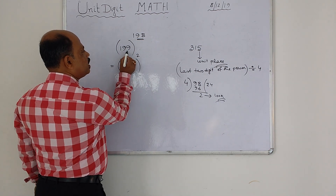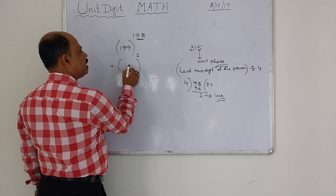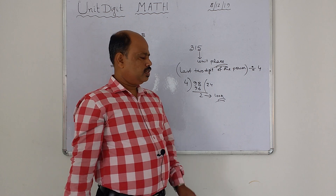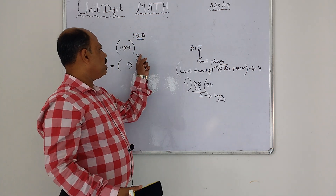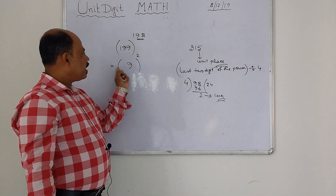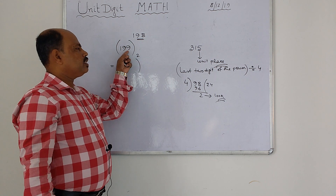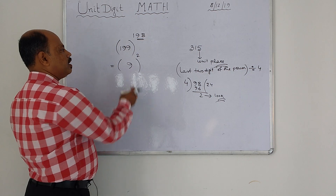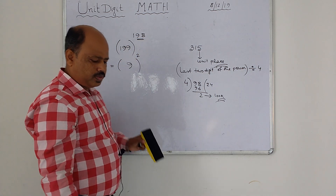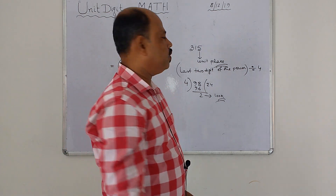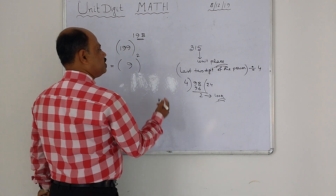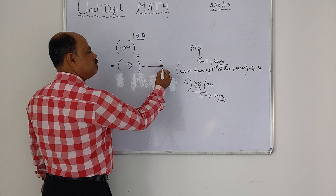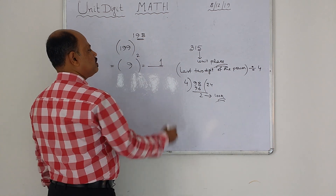What is the unit digit of the number? It is nine. Therefore, you have to write that remainder as the power, and within brackets write the unit place of that number. It becomes nine to the power two. And nine to the power two is eighty-one. So what is the unit place of eighty-one? One.